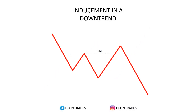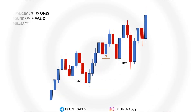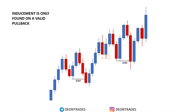And here is another simple drawing showing inducement in a downtrend. So in a downtrend, inducement will be found on the first valid bearish pullback. Here's a more vivid example: inducement is only found on a valid pullback, not just any pullback, so you have to know what a valid pullback is before you draw your inducement lines on the chart.